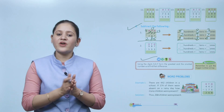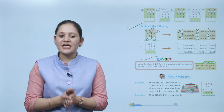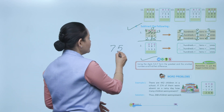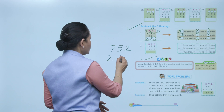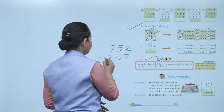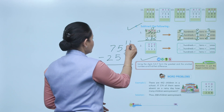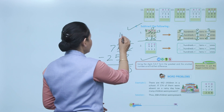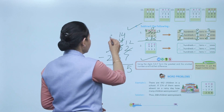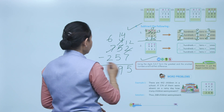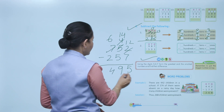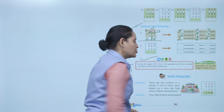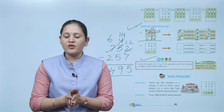HOTS: Using the digits 5, 2, and 7, form the greatest and the smallest number and find the difference. The greatest number is 752 and the smallest is 257. Finding the difference: borrowing as needed gives 752−257=495. Remember to always put the bigger number on top when subtracting.